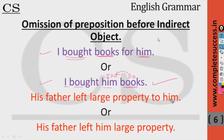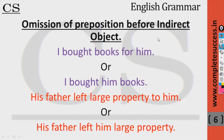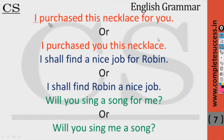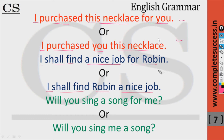'His father left large property to him' — or — 'his father left him large property.' Both are correct. 'I purchased this necklace for you' — or — 'I purchased you this necklace.' 'I shall find a nice job for Robin' — or — 'I shall find Robin a nice job.' So we can use: subject, verb, direct object, preposition, indirect object — or — subject, verb, indirect object, then direct object.